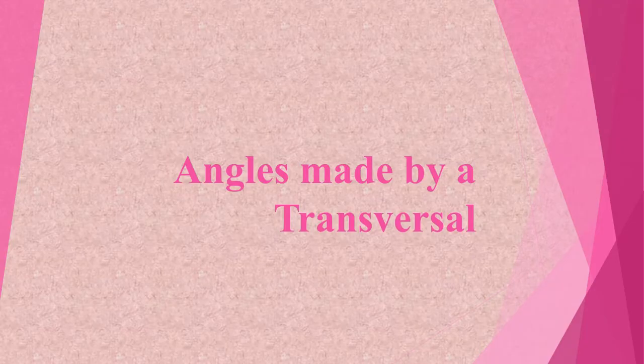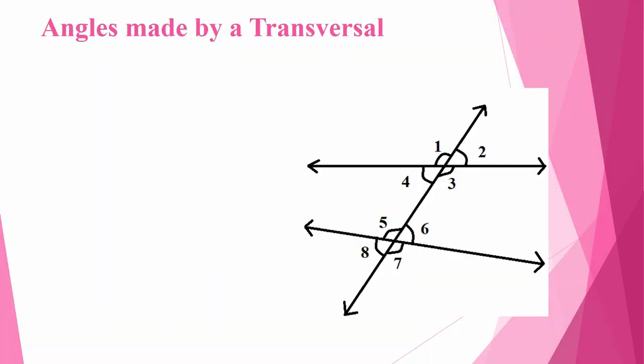Next we will see angles made by a transversal. See this figure — this is a transversal because this line is intersected with these two lines at distinct points. This transversal has eight angles, and the eight angles also have some special names.